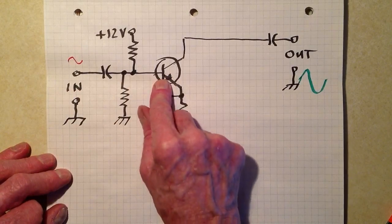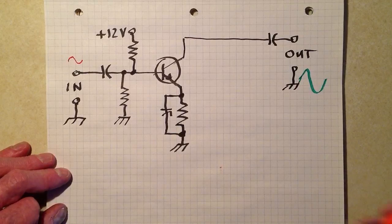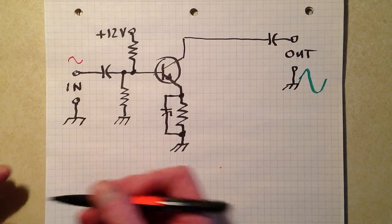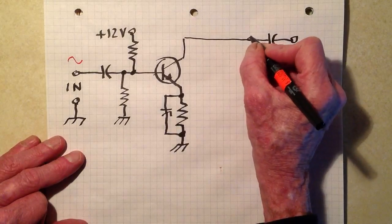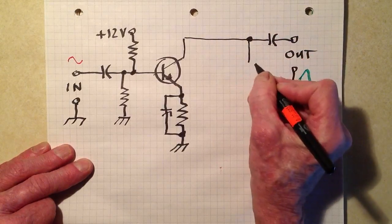So the signal goes in here and it reaches the base. Well, we need to provide a path somehow for a current to flow through this transistor to make it work, otherwise we're not going to have any performance at all.